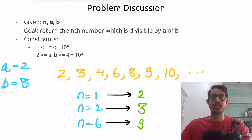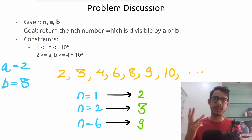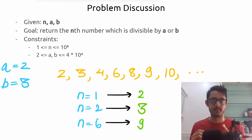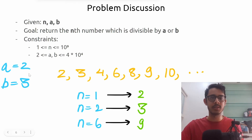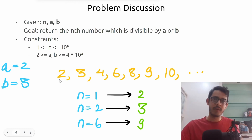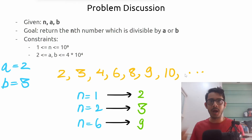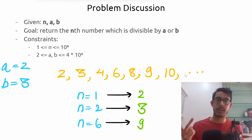Let's quickly talk about the problem statement first. We're given three different integer values n, a, and b, and the goal of this problem is to return the nth number which is divisible by either a or b. For example, if a is 2 and b is 3, we have a sequence like 2, 3, 4, 6, 8, 9, 10, and so forth. All of these numbers are either multiples of 2 or 3, or both.